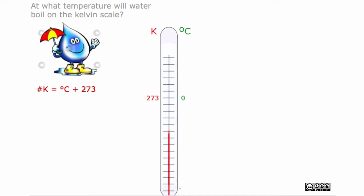When looking at the screen, you can see that 100 degrees Celsius and 273 Kelvin is equal to 373 Kelvin.